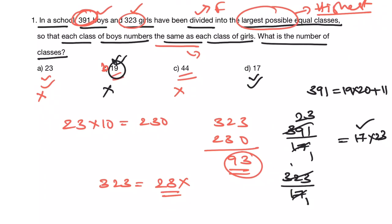Now 323 by 17. 17 ones are 17. 32 minus 17 is 15, 153. 17 nines are 153. That means 323 is 17 into 19. So if you see in both of them, 17 is the highest common factor.